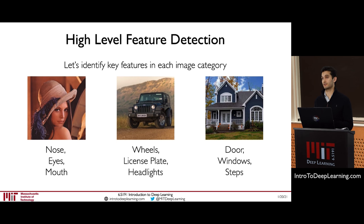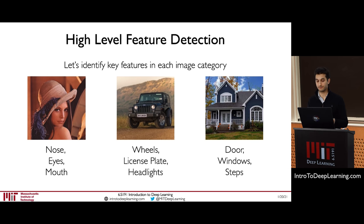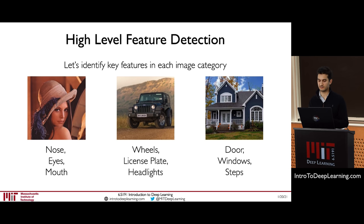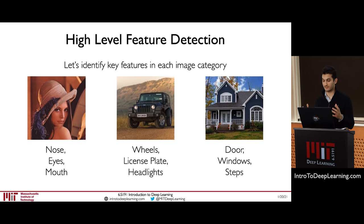Our image classification pipeline needs to know what the features are and be able to detect them in a brand new image. For example, if we want to detect human faces, features might include noses, eyes, and mouths. For cars, we might look for wheels, license plates, and headlights. For houses, doors, windows, and steps. These are all examples of features for larger object categories.